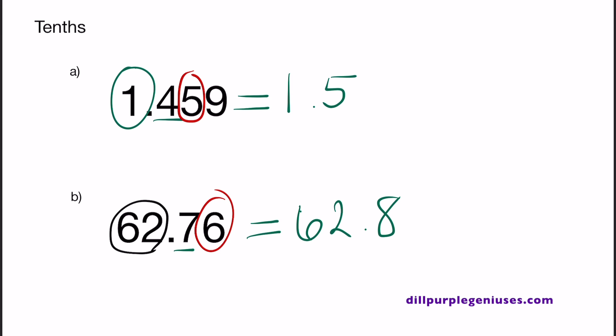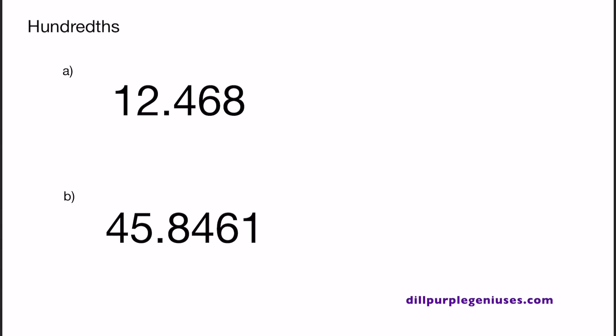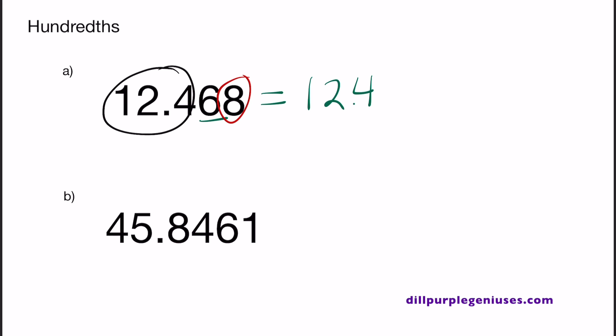Last but not least, let's round numbers according to the hundredths place. In A, we have 12.468. We need to round this number according to the hundredths place. 6 is in the hundredths place, and the number to the right of it is 8. 8 is greater than 5, so we need to round this decimal up. Let's write the numbers that are to the left of 6, so we start with 12.4. Since 8 is greater than 5, we round up, so 6 becomes 7. The final answer to A is 12.47.